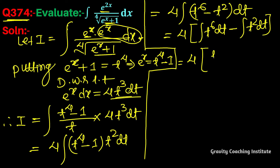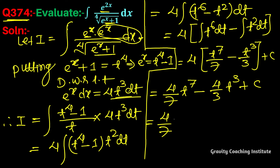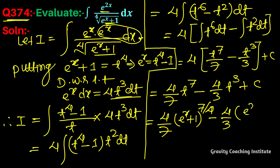This gives t to the power 7 by 7 minus t to the power 3 by 3. Multiplying by 4 we get 4 by 7 into t to the power 7 minus 4 by 3 into t to the power 3 plus c. Substituting back the value of t, where t equals (e to the power x plus 1) to the power 1/4, the answer is: 4/7 into (e^x + 1)^(7/4) minus 4/3 into (e^x + 1)^(3/4) plus c.